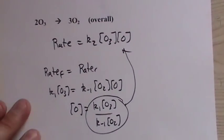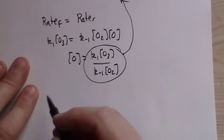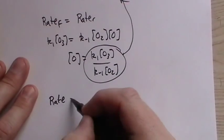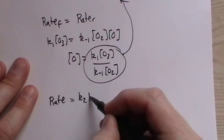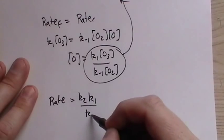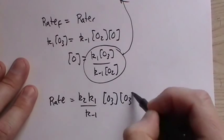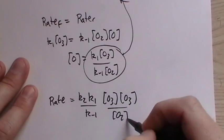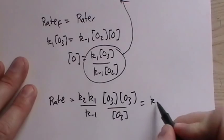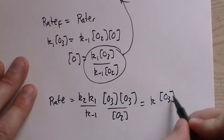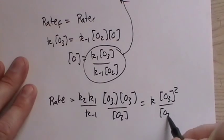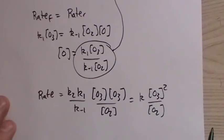And what we end up with is rate K1, K-1, O3, O3, O2, which simplifies to K, O3 squared, and O2. And that's our rate law.